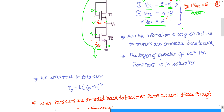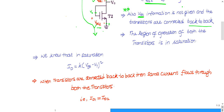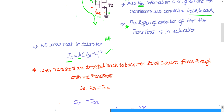Now we need to find the region of operation. VDS information is not given. Whenever VDS information is not given and transistors are connected back to back in series, we can conclude the MOSFETs are operating in saturation. The current expression in saturation is: ID = k(VGS − Vt)². k information is given, so we proceed using this equation for both transistors.